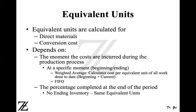We have two methods to calculate equivalent units and assign costs to completed and partially completed units. The first method is the weighted average method, which is the easier of the two. The other method is the FIFO method, or first-in first-out method.